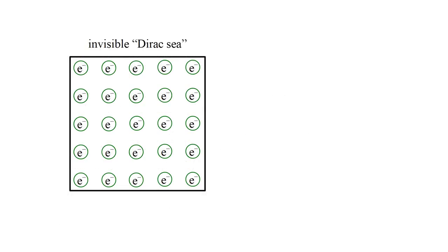In this cartoon representation, the Dirac sea contains an infinite number of electrons in all possible negative energy states. This forms the background of, quote, empty space, and is assumed to be unobservable.